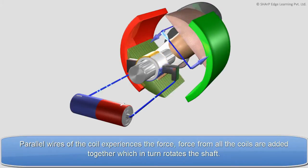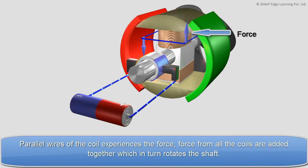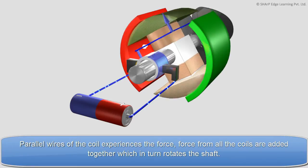Parallel wires of the coil experience the force. Force from all the coils are added together which in turn rotates the shaft.